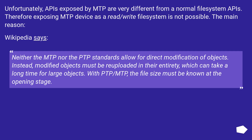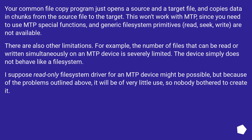Instead, modified objects must be re-uploaded in their entirety, which can take a long time for large objects. With PTP/MTP, the file size must be known at the opening stage. Your common file copy program just opens a source and a target file and copies data in chunks from the source file to the target. This won't work with MTP.